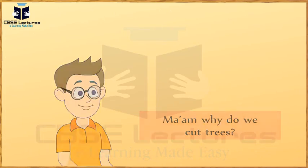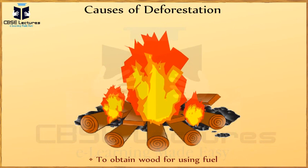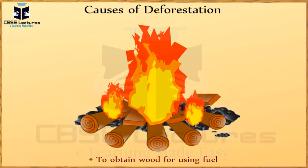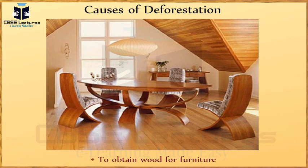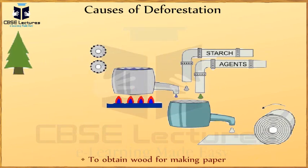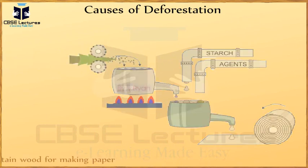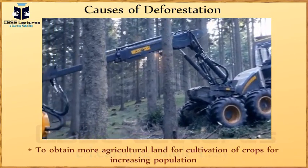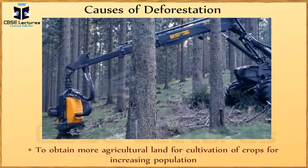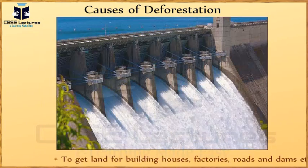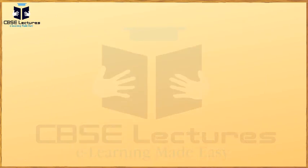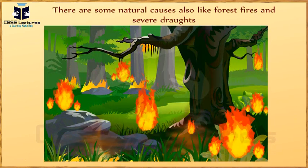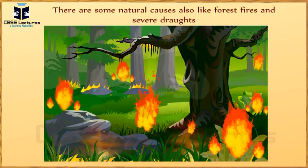Ma'am, why do we cut trees? The causes of deforestation include: to obtain wood for fuel, for furniture, and for making paper; to obtain more agricultural land for cultivation of crops for the increasing population; to get land for building houses, factories, roads and dams. There are also natural causes like forest fire and severe drought.